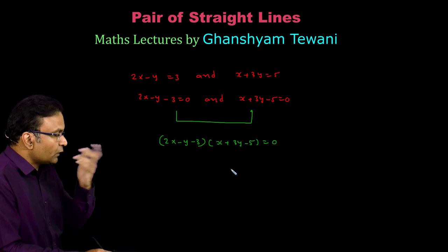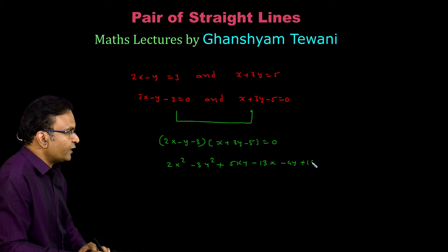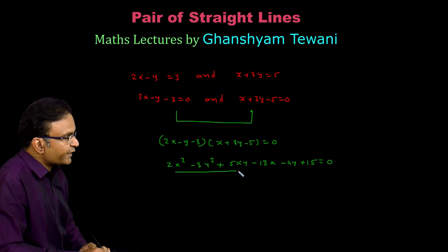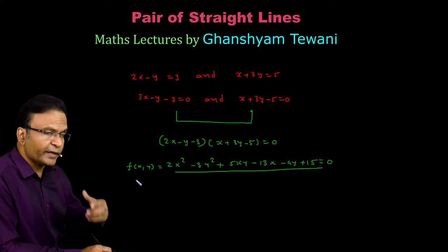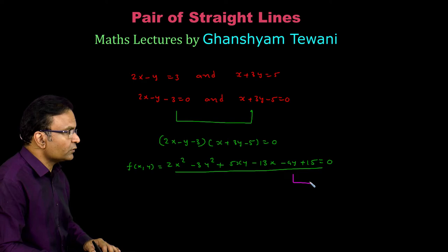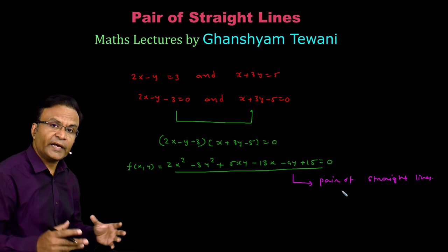If I expand this I get the equation 2x square minus 3y square plus 5xy minus 13x minus 4y plus 15 is equal to 0. This is a second degree equation in variables x and y. We can say the expression on the LHS is a function of two variables x and y, written as f(x, y). This equation is called pair of straight lines — it is nothing but the combined equation of two straight lines.